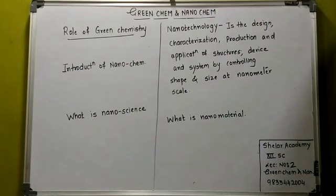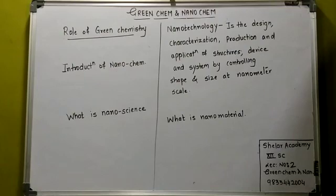Examples of nanomaterials include titanium oxide, silver, synthetic amorphous silica, iron oxide, and azo pigments. The bulk form properties are different from nanoparticle properties. That is all about nanomaterials, and we will proceed to the next topic.